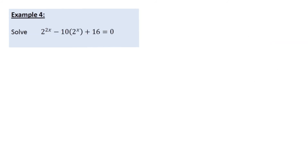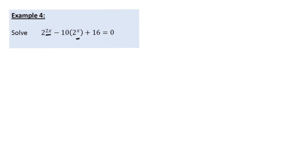This is the final example for hidden quadratics today. In my opinion this is the hardest one because it's not immediately obvious that you should substitute — you might want to use exponentials, but the best approach is substitution as before. The powers are again in a ratio of 2 to 1, so we can make this into a quadratic equation. In this case, let 2 to the power of x equal y.